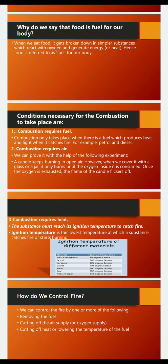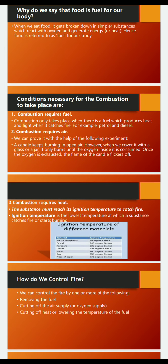Have you ever thought why a matchstick cannot produce fire on its own? The head of the matchstick contains a mixture of antimony trisulfide and potassium chlorate. The rubbing surface of the matchbox contains powdered glass and a little red phosphorus. When the stick is rubbed against the surface, some red phosphorus gets converted into white phosphorus, which reacts with potassium chlorate to produce enough heat to ignite antimony trisulfide. In this way, the matchstick starts burning when it attains its ignition temperature.